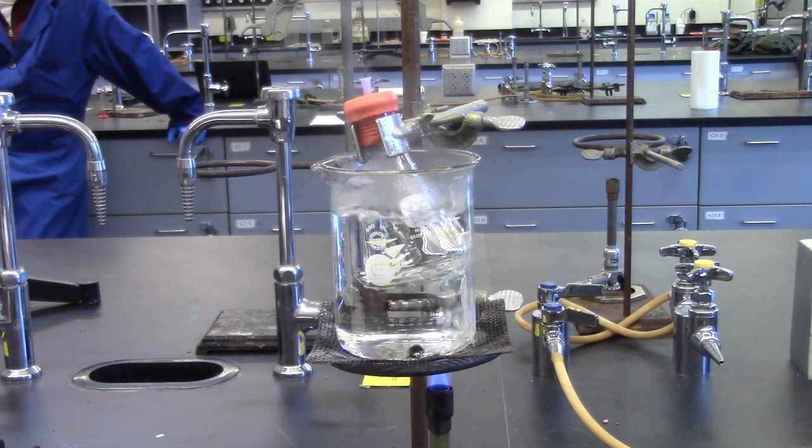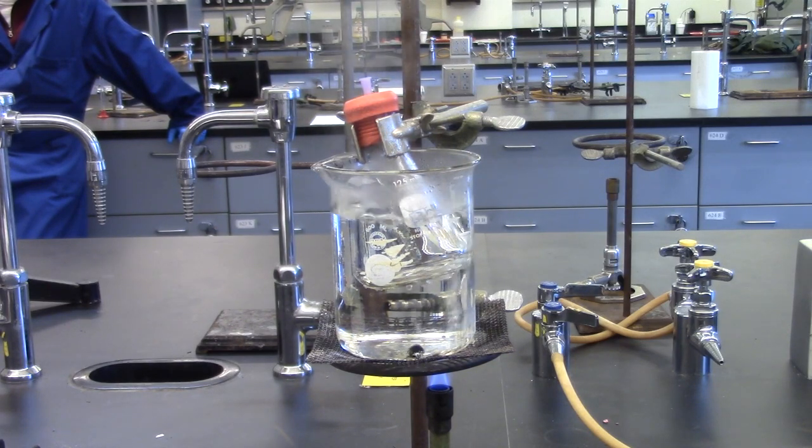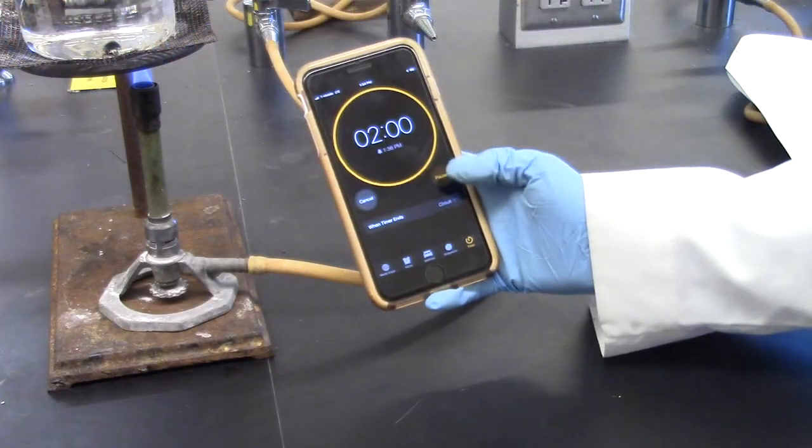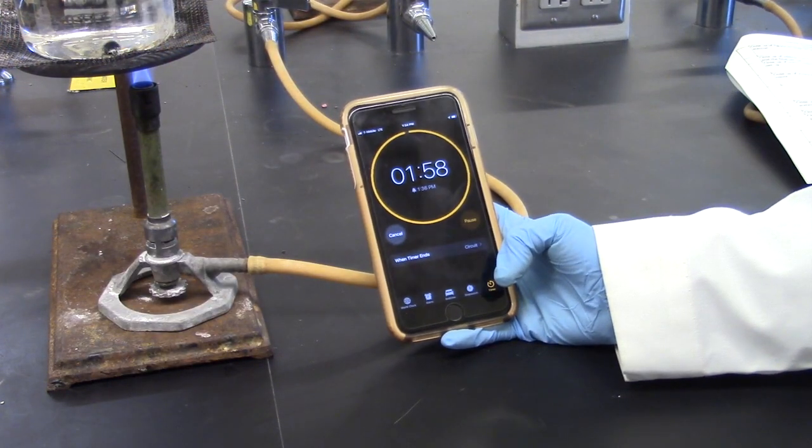Keep boiling until all the liquid in the flask has disappeared. This should take approximately 15 minutes. Continue to boil for an additional two minutes after this point.